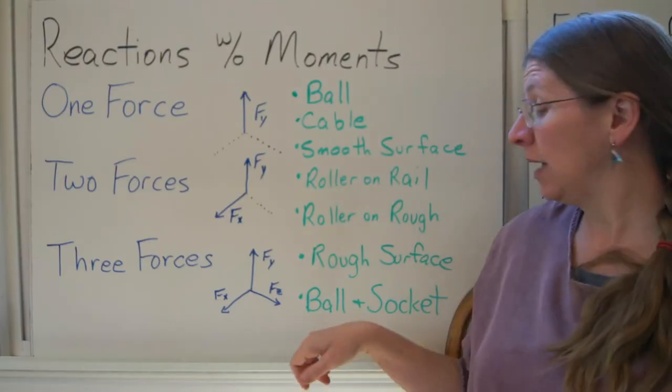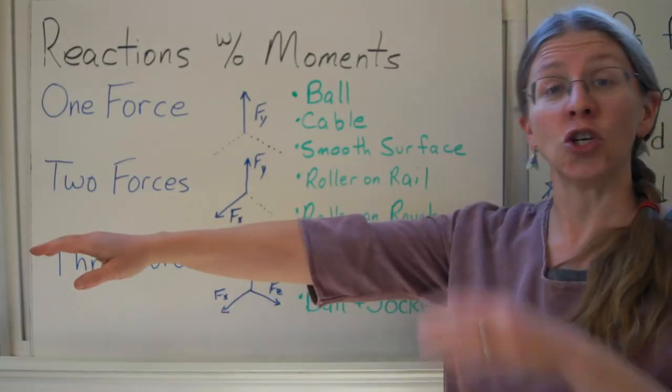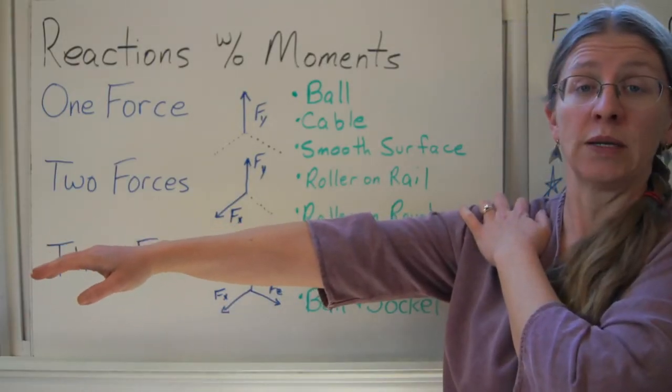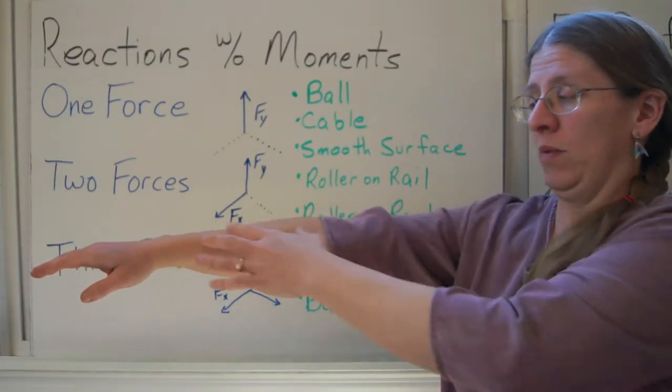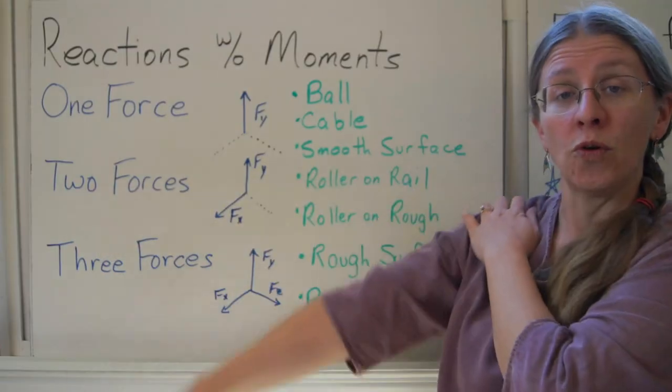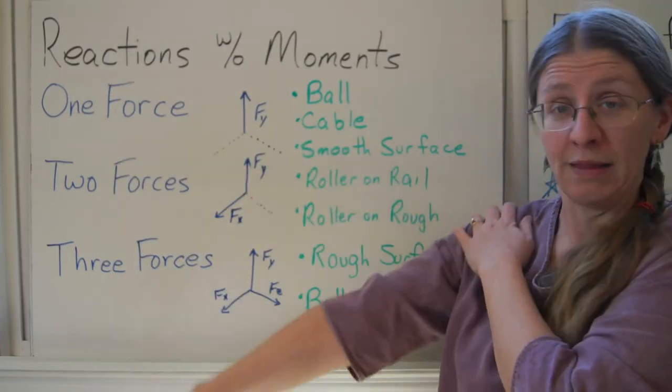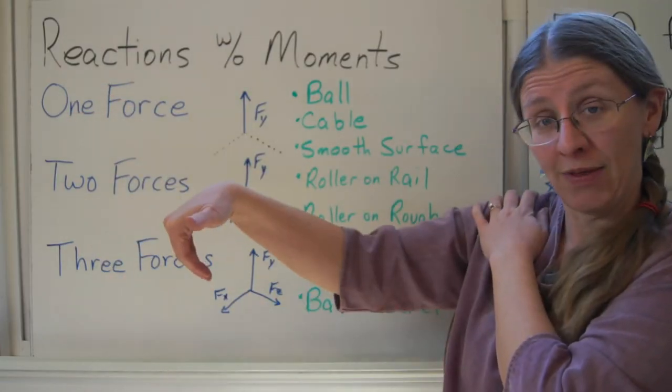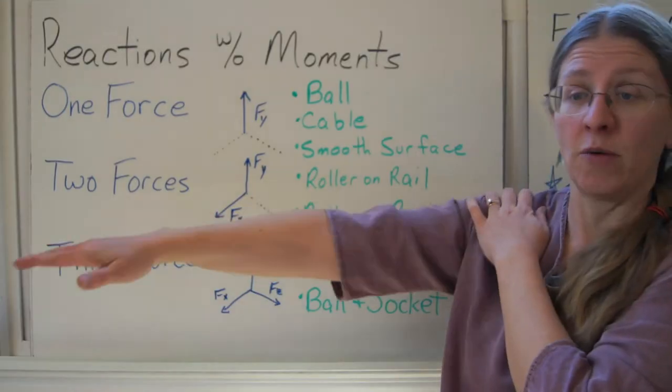Most commonplace you'll see this one is with a ball and socket. So if you consider your shoulder, which is a ball and socket joint, your arm, the free body diagram of your arm, your arm is allowed to rotate up in this direction. That's a rotation in that direction. You can rotate your arm here, which is a rotation in that direction.